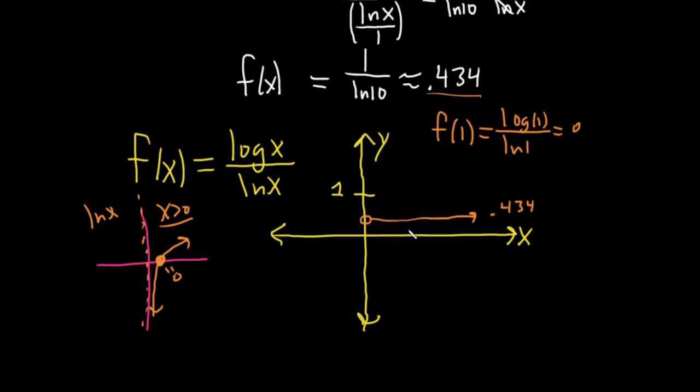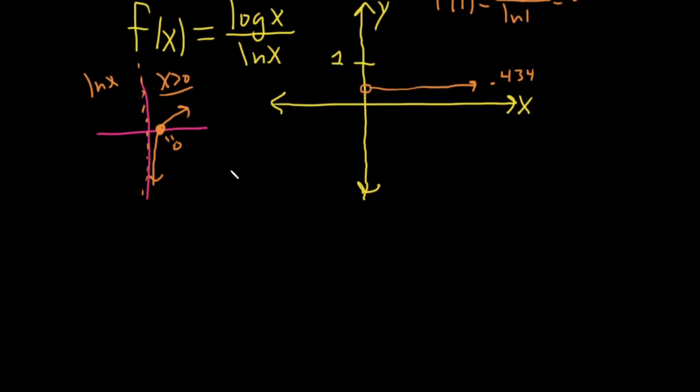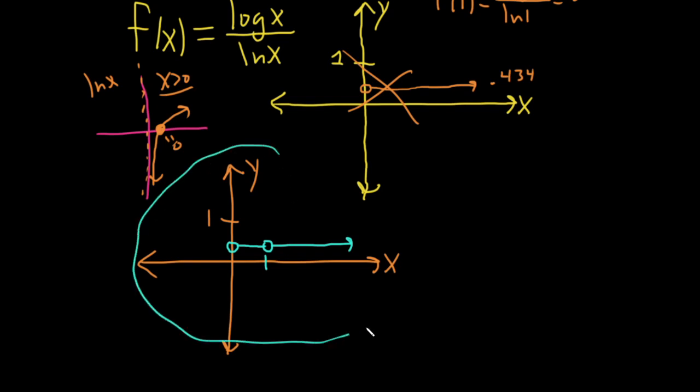So basically, the correct graph would look something like this. Here's the y-axis, here's the x-axis. So this is wrong. And then here's 1. And let me switch colors. Let's go to blue here. And then at 0.434, we have a hole here. But then over here at 1, we have another hole. And it keeps going like that. So really, really sneaky. So this would be the correct graph of our function. I often ask people to find the domain as well.